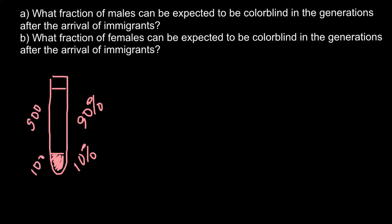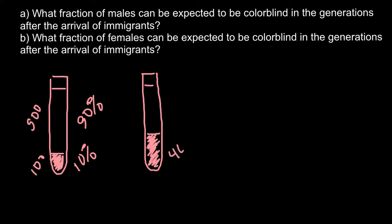Now we have another test tube, also with 1,000 milliliters. But this time when we centrifuge this solution, we find that 40% is the substance of interest — so 400 milliliters of the substance and 600 milliliters of solvent.